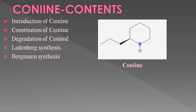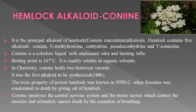Let us see the structure of conine. It is a piperidine derivative with a propyl group — an n-propyl group at position two. So the IUPAC name of conine is 2-propyl piperidine.